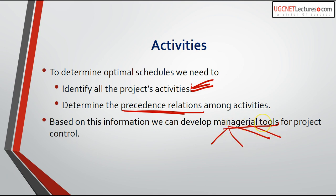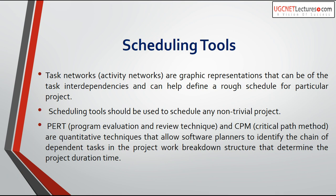The first scheduling tool is activity networks — also called task networks. These are graphical representations of task interdependencies that help define a rough schedule for a particular project. Scheduling tools should be used for any non-trivial project. We also have PERT — Program Evaluation and Review Technique — and CPM — Critical Path Method. These two equivalent techniques allow a software planner to identify the chain of dependent tasks in the project work breakdown structure that determines the project duration time.